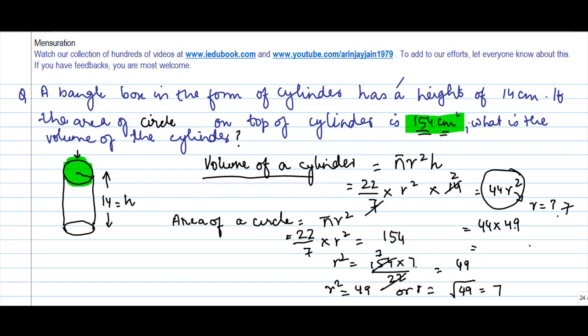49 × 4 = 196, carry 1. 49 × 4 = 196 plus 1 = 215. So the volume of this cylinder is 2156 centimeters cubed.